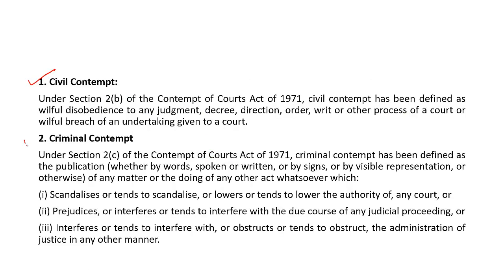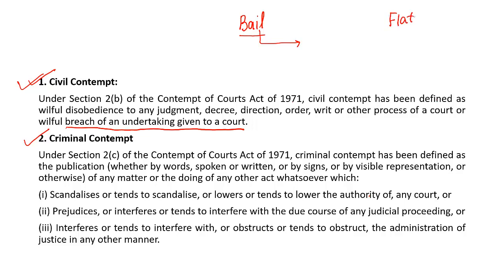This 1971 law talks about two types of contempt: civil contempt and criminal contempt. Civil contempt is when you breach an undertaking given to the court. For example, if the Supreme Court grants you bail with a condition not to leave your city without permission, and you violate that condition, that is civil contempt.